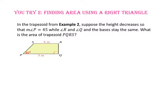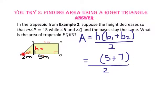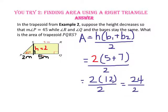Pause the video and do You Try number 2. In the trapezoid from Example 2, suppose the height decreases so that the measure of angle P equals 45, while angle R, angle Q, and the bases stay the same. Starting with the formula, half the height times the sum of the bases, the bases are still 5 and 7 meters. Drawing in the perpendicular height creates a 45-45-90 triangle. Since the legs of a 45-45-90 triangle are congruent and the base portion is 2 meters, the height is also 2 meters. So 2 times 12 divided by 2 equals 12. The area of the new trapezoid is 12 meters squared.